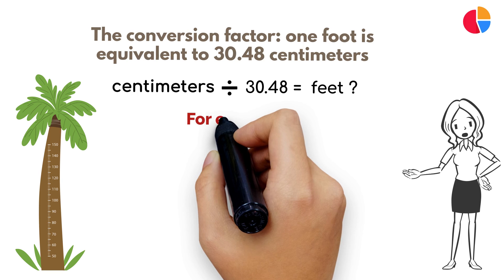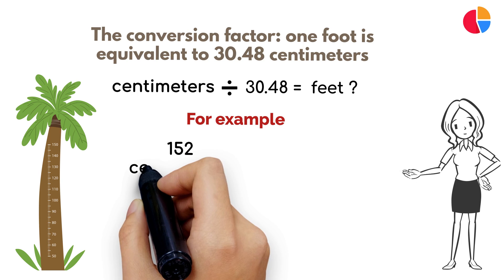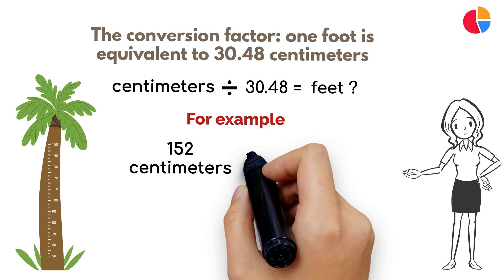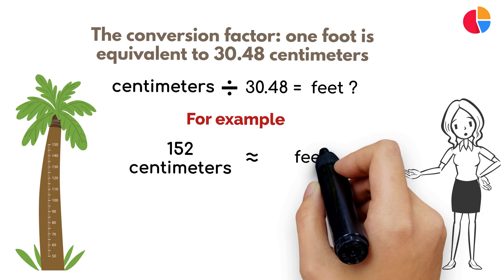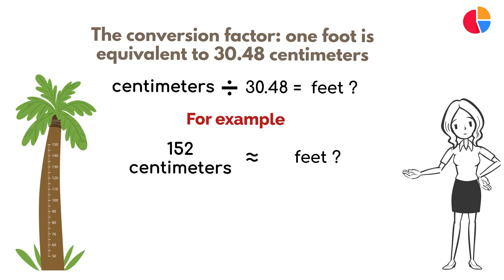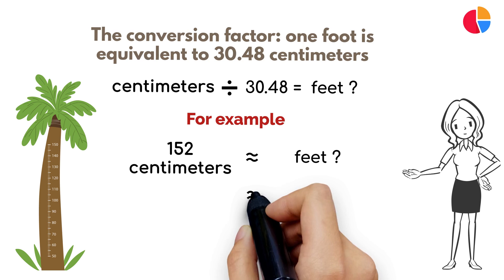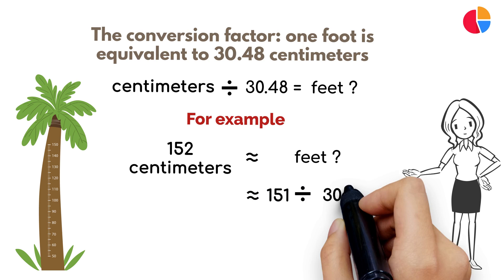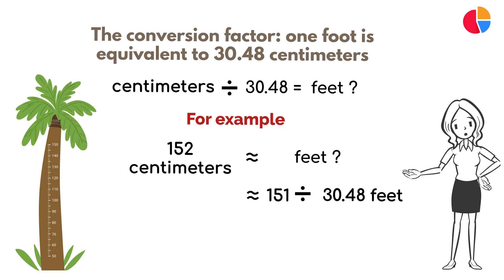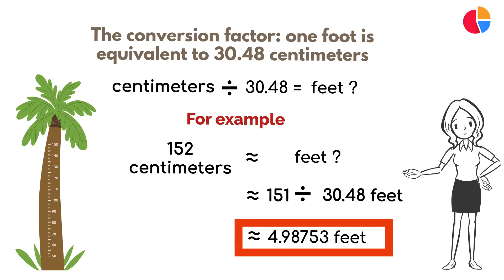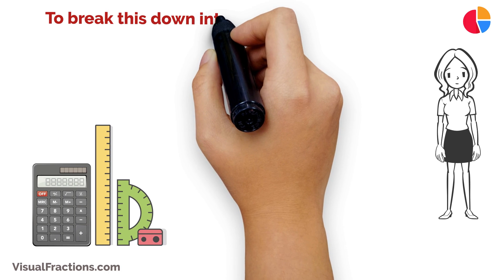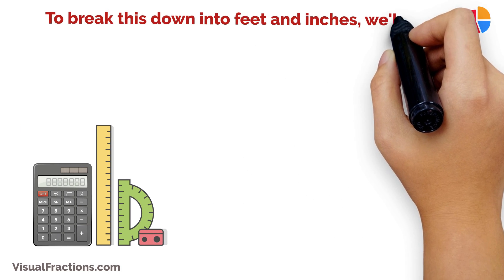Now, let's dive into an example. Suppose we want to convert a length of 152 centimeters to feet. We begin by dividing 152 by the conversion factor of 30.48. The result is approximately 4.98753 feet.